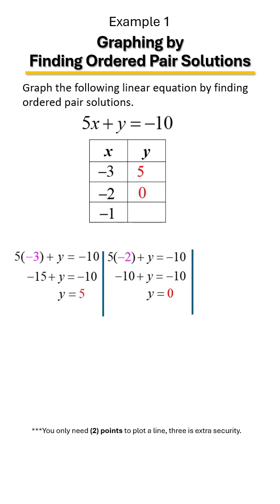Let's plug in one more value — negative 1 in X's place. We have 5 times negative 1, which is negative 5. The last step is to add 5 to each side, and Y equals negative 5. So when X is negative 1, Y is negative 5.